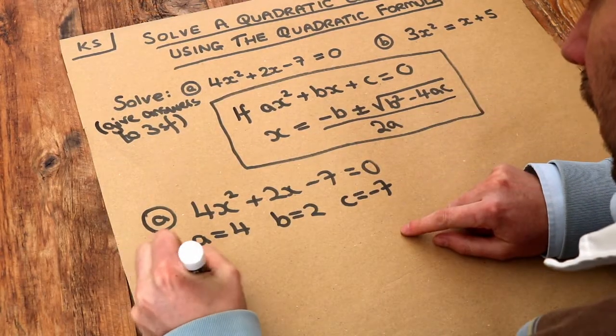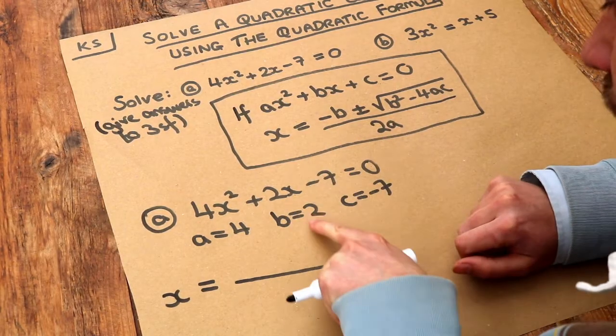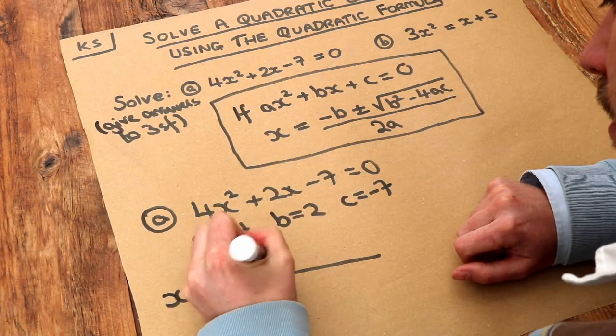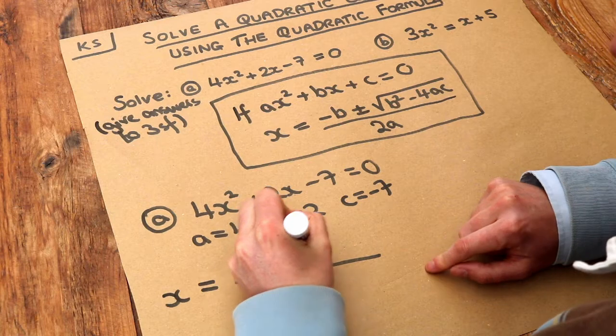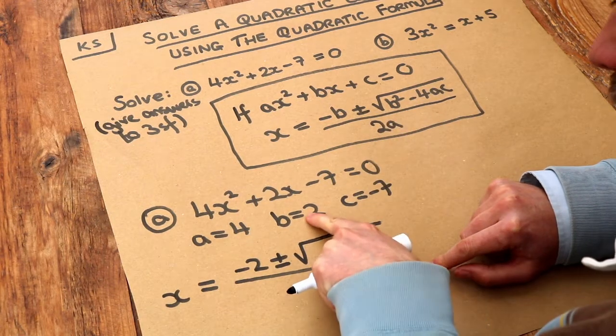So we've got x is equal to minus b, so minus 2, plus or minus the square root of b squared, so it's 2 squared.